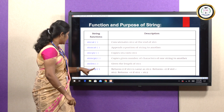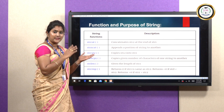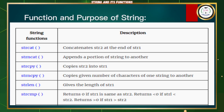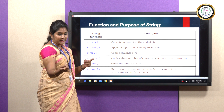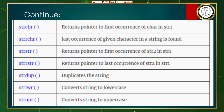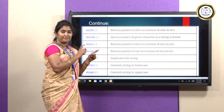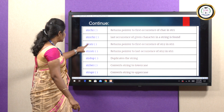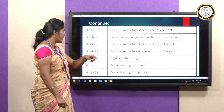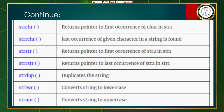strcmp is used to compare two strings. It returns zero if both strings are equal, less than zero if string one is less than string two, and greater than zero if string one is greater than string two. strchr returns the pointer to the first occurrence of a character in the string. strrchr finds the last occurrence of a character in the string. strstr returns the pointer to the first occurrence of string two in string one. strrstr returns the pointer to the last occurrence of a string in string one.